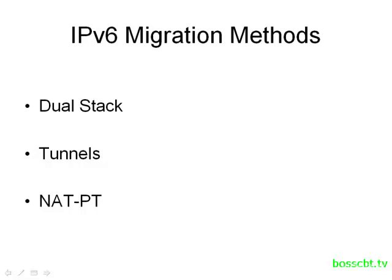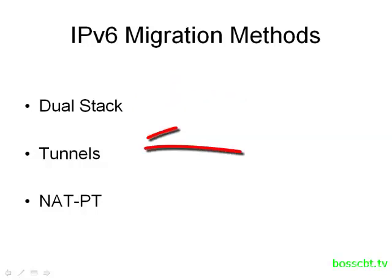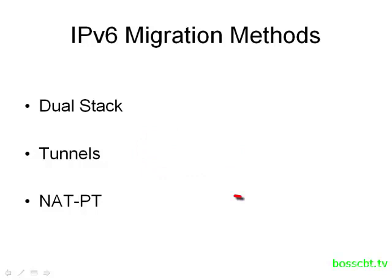We're going to take a look at a few of the different approaches we can take in order to make that migration. We'll begin with something known as dual stack, where we support both versions at the same time. Then we'll move on to tunneling, where we put IPv6 packets into IPv4 to get across parts of our network. Finally, we'll look at NAT-PT, where we're NATing on the protocol level and swapping out the headers between version 4 and version 6.